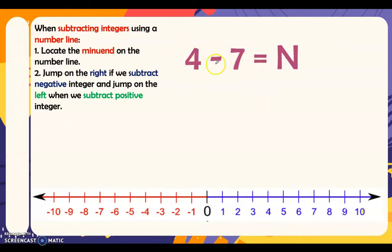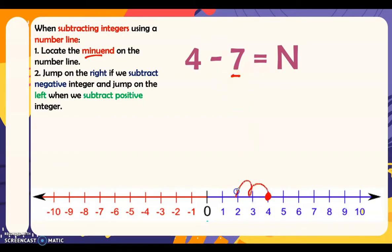Next: 4 minus 7 is equal to n. Let's locate the minuend 4 on the number line. We are subtracting a positive number, so we move to the left 7 times — 1, 2, 3, 4, 5, 6, 7 — and we end up at negative 3. Therefore, 4 minus 7 is equal to negative 3.